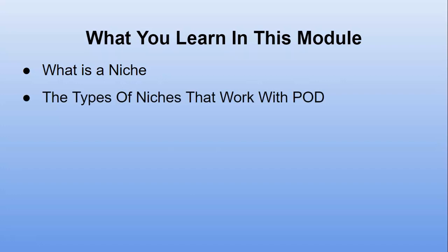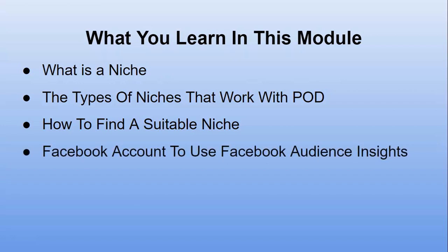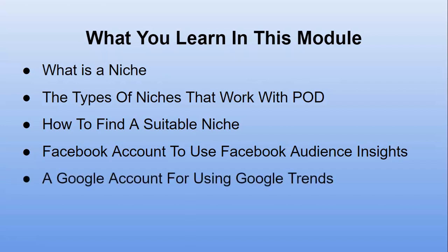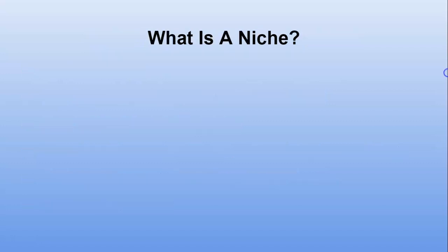In this module you'll learn what a niche is, the types of niches that work with print on demand, and how to find a suitable niche. You'll need a Facebook account to use Facebook Audience Insights, a Google account for Google Trends and the Google Sheet (link below this video), and a Pinterest account. If you have any questions, email info@clevermerchants.com.